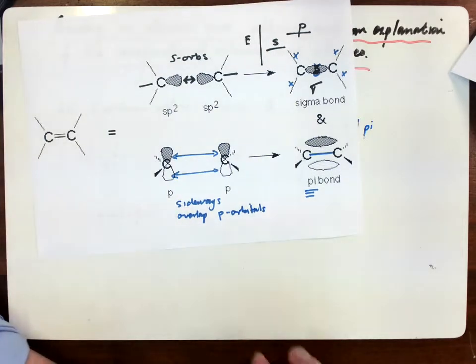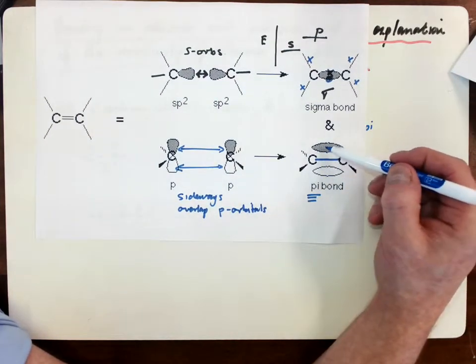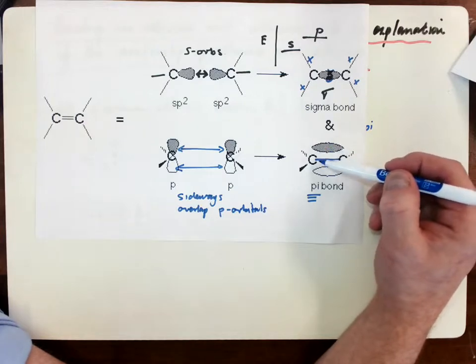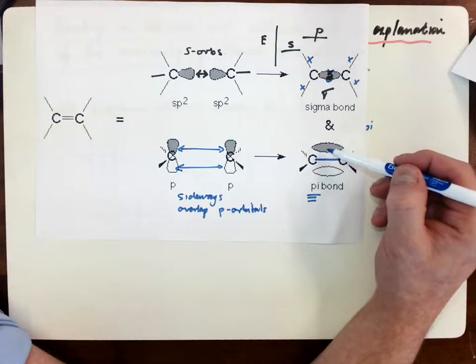Now, that means that the electrons in this region are further away from the nucleus than the electrons in this region, which means they're held a little bit less strongly.